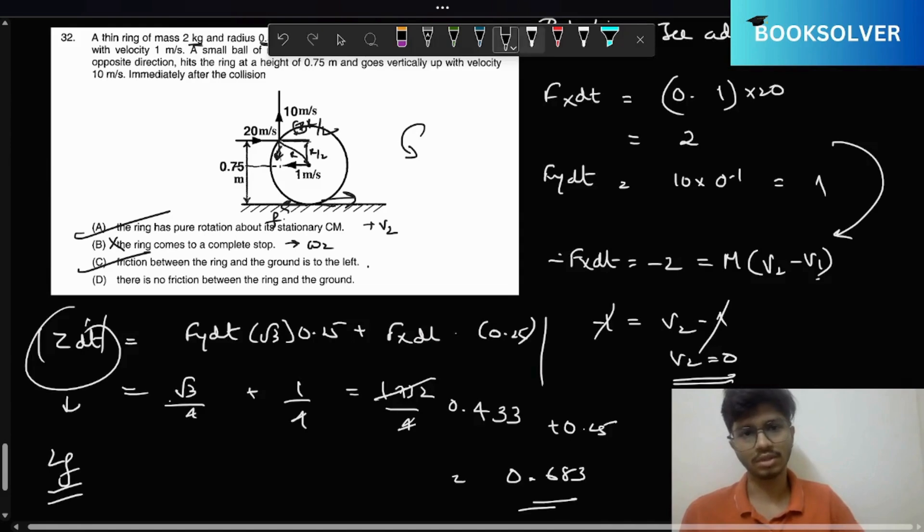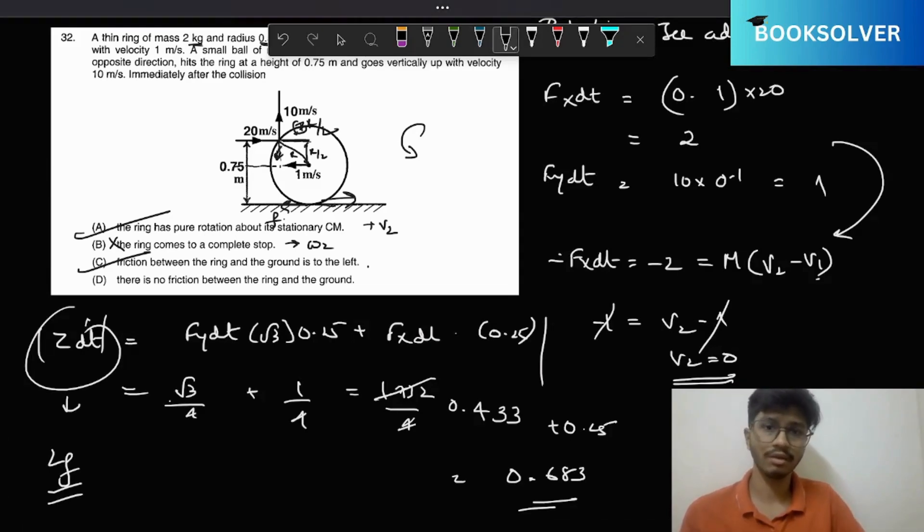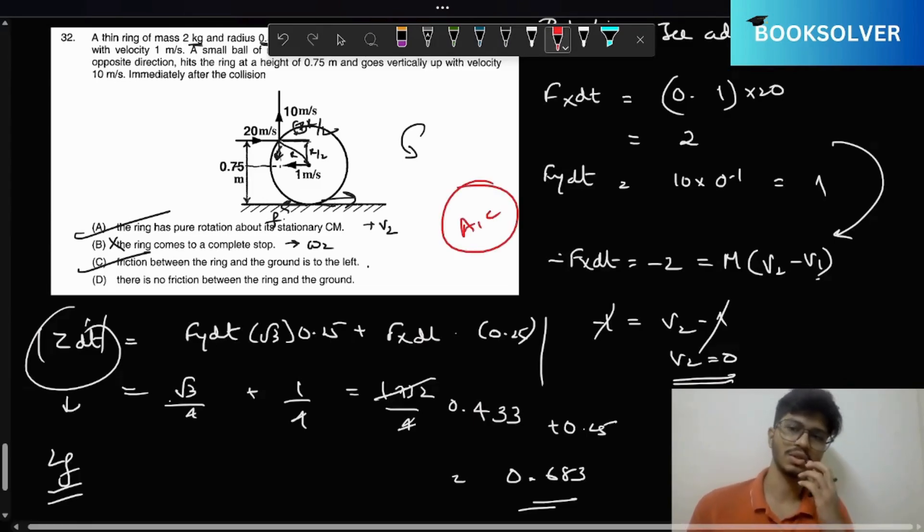Friction between the ring and the ground is to the left, so this is also true. There is no friction—that would be false. Friction is there, because if that's not there the ring will never perform pure rotation motion. So option A and C is the right answer to this question.